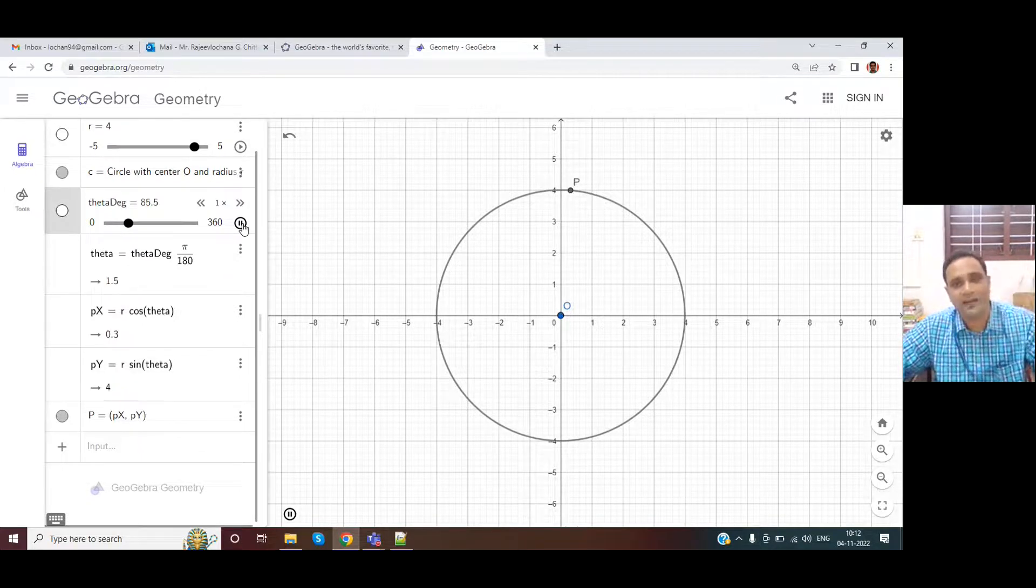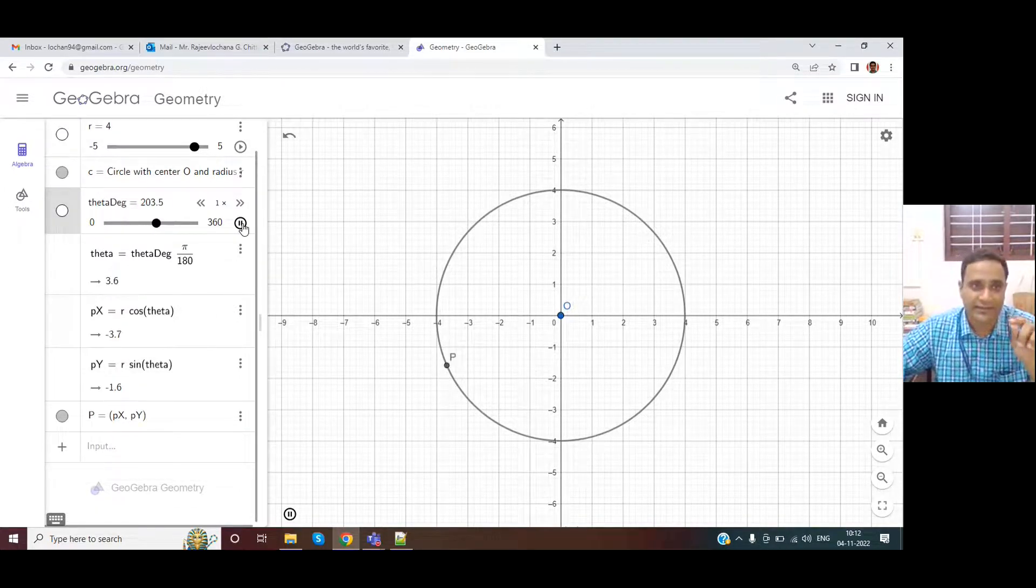The point P will start moving on the circle. The angle is getting changed. It goes to 360 and again it comes back.